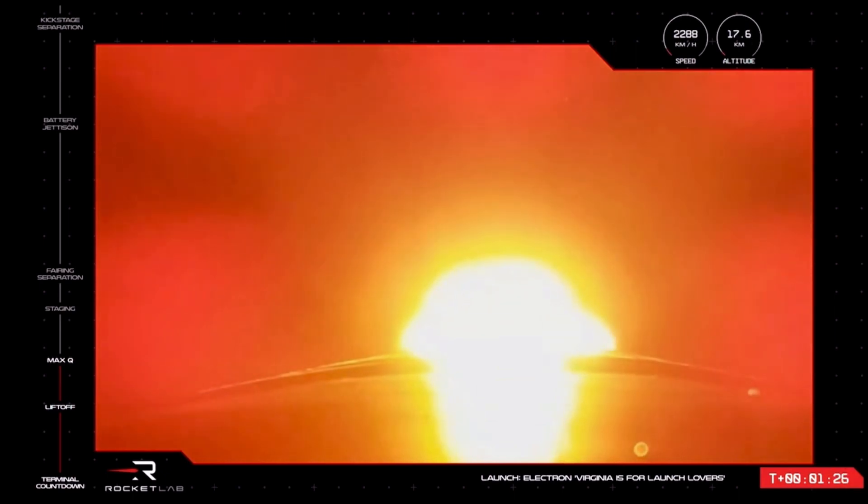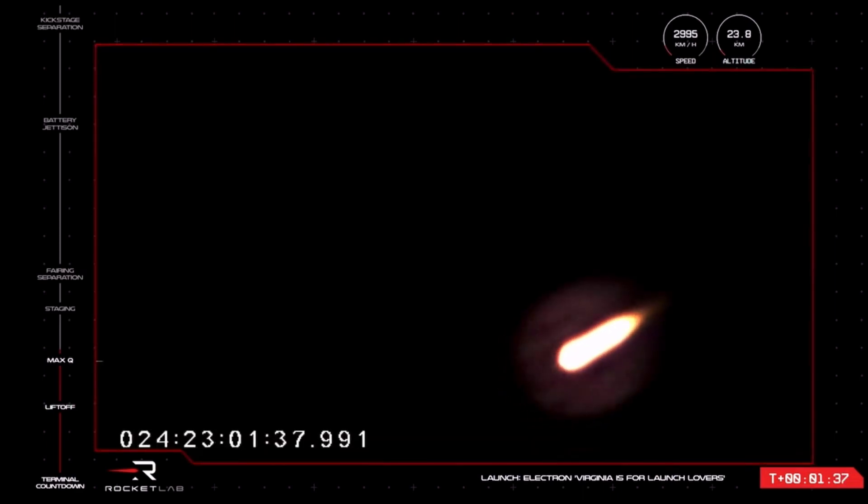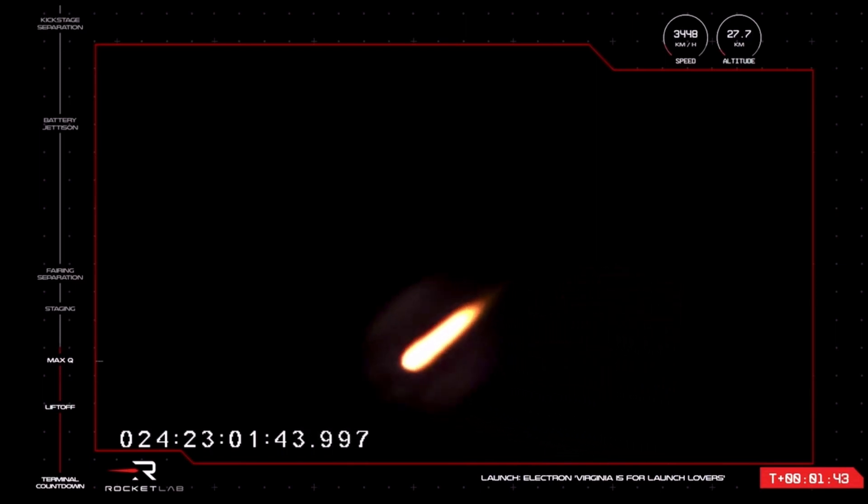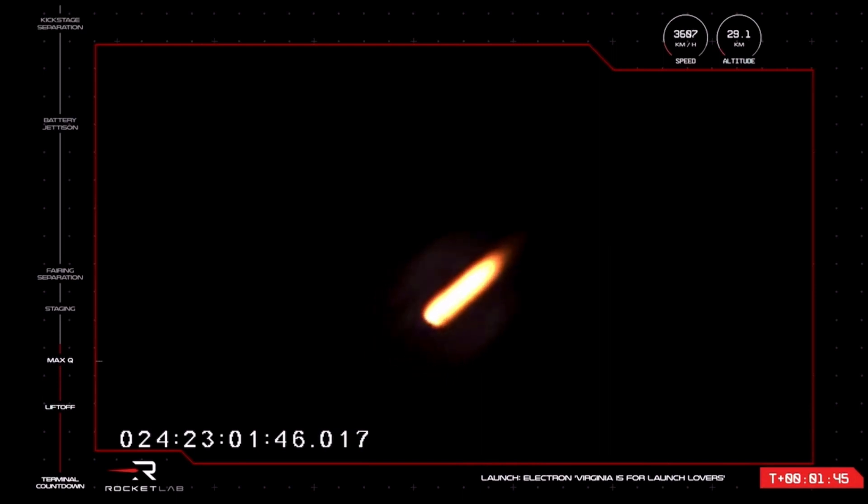The nine Rutherford engines on the first stage are throttling back up and all looks nominal for propulsion there. We are now at 1 minute and 32 seconds into flight, with Electron moving at speeds of nearly more than 3,000 kilometers an hour now.